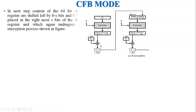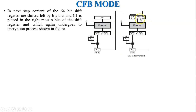In the next step, the contents of the 64-bit shift register are shifted left by b minus s bits — that is, the remaining 56 bits are shifted left. Then C1, which is s bits of cipher text 1, is placed at the right-hand side of the shift register where 8 bits are now empty. This prepares the shift register for the second plain text block to generate cipher text in the encryption process.